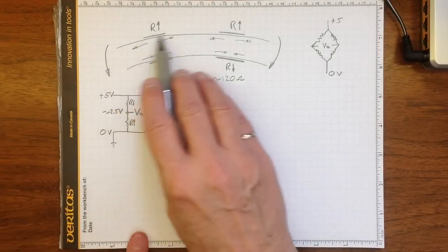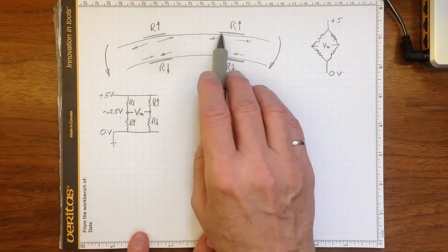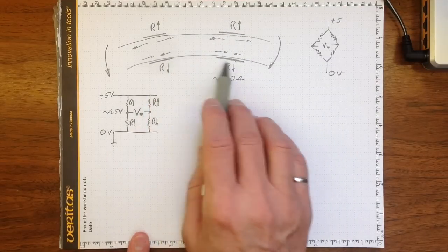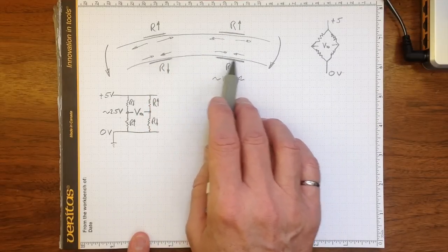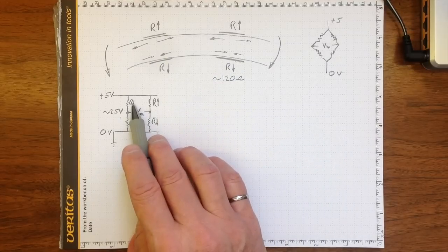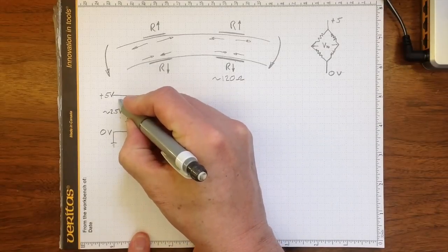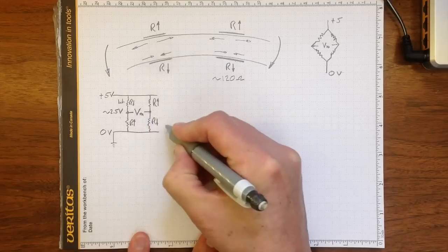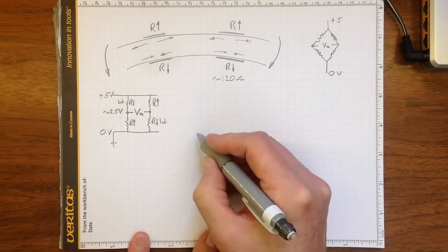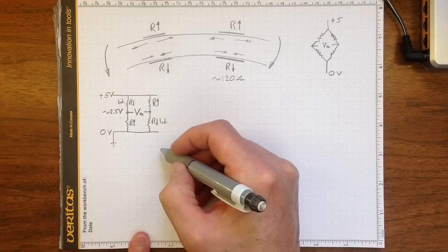In the case of our cantilever beam load cell, where we're putting this beam into bending, increasing the resistance by stretching the two gauges on top and decreasing the resistance of the two gauges on the bottom by putting them in compression, then if we want the ones that are going down to be in those locations, that should be one of the bottom gauges and that should be one of the bottom gauges. If we want to get that direction, it doesn't really matter which one we pick to put in which position in the circuit.